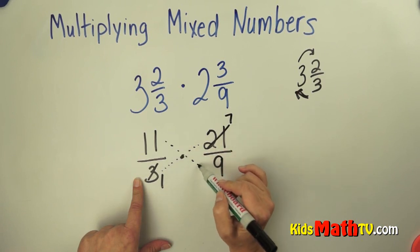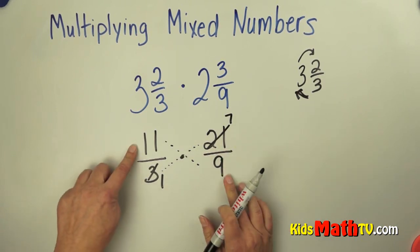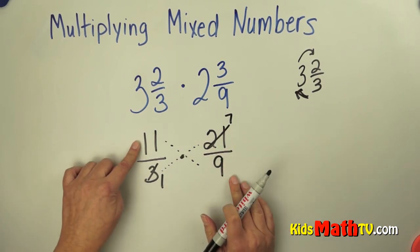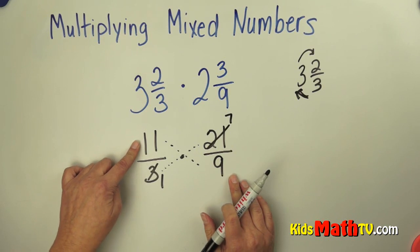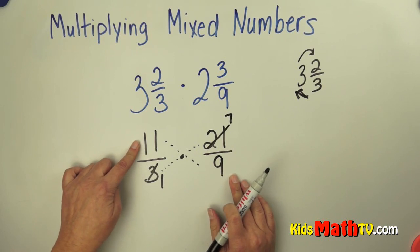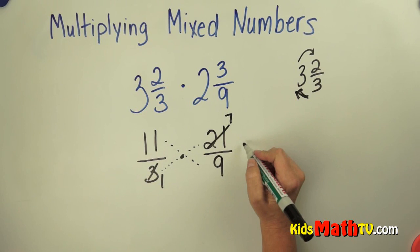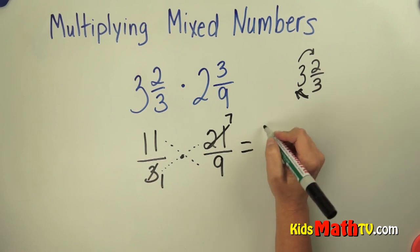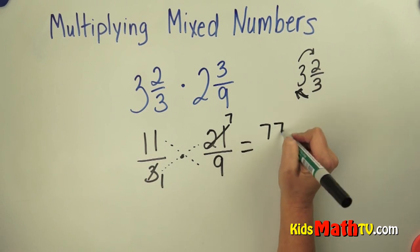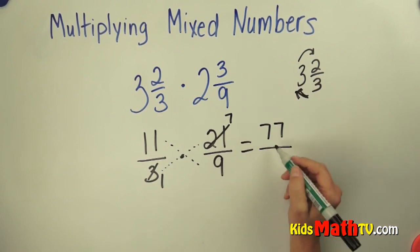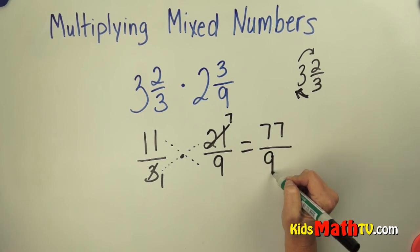I'm going to look at 11 and 9 as well. There is not a number that will divide 11 and 9 evenly. So now I'm going to multiply the numerators: 11 times 7 is 77, and the denominators: 1 times 9 is 9.